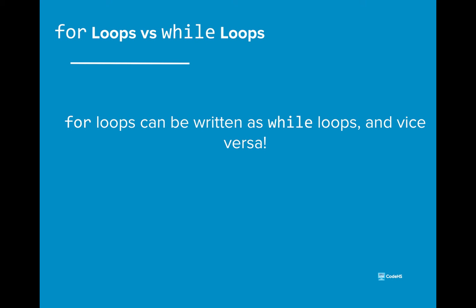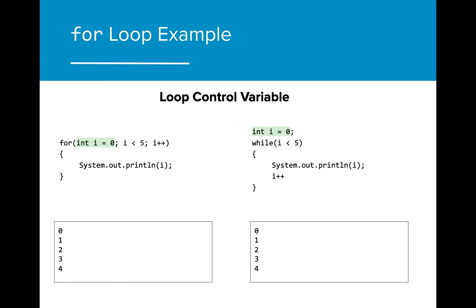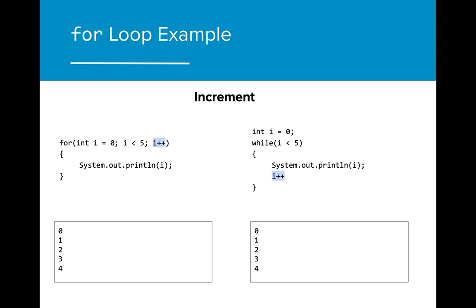If you've noticed that while loops and for loops share some similarities, you're right. We can actually write for loops as while loops and write while loops as for loops. If we wanted to count up from 0 to 4, we can write a program using either a for loop or a while loop. The loop control variable for the for loop can be found as the initial counter used in the while loop. The Boolean expression exists equally in both, and the increment is also present. For while loops, the increment is a part of the actual execution, whereas in the for loop it belongs in the initial header.